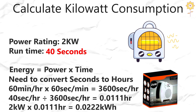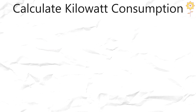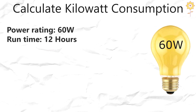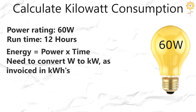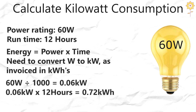Multiplying 2 kilowatts by 0.0111 hours gives 0.022 kilowatt hours. For smaller objects with watt ratings, if a 60-watt light bulb is on for 12 hours, we use the same formula but first convert watts to kilowatts: 60 divided by 1,000 equals 0.06 kilowatts. Then 0.06 kilowatts times 12 hours equals 0.72 kilowatt hours.